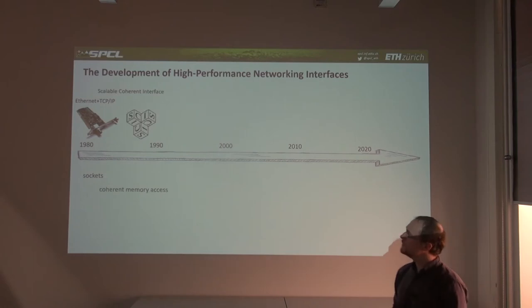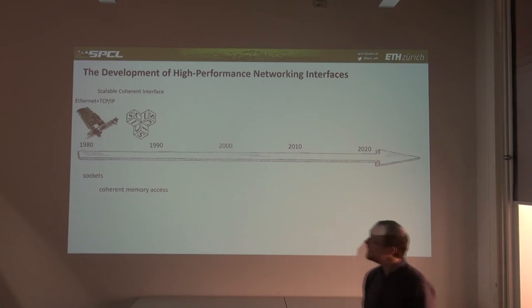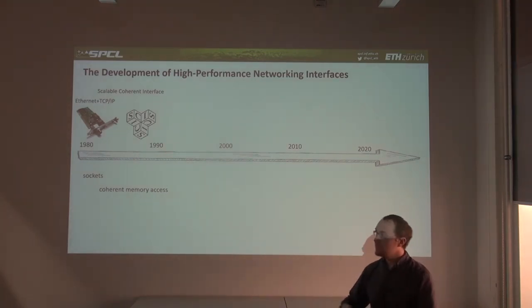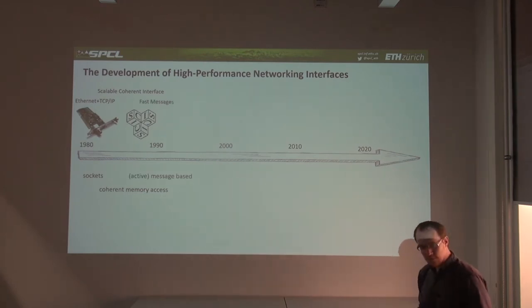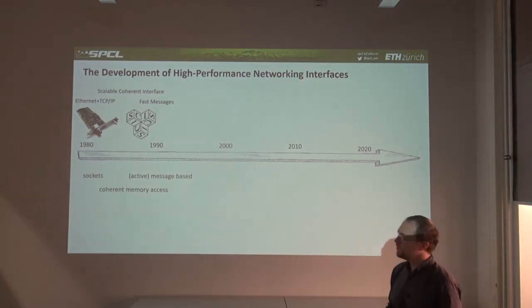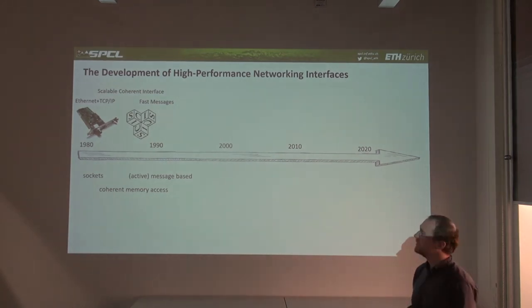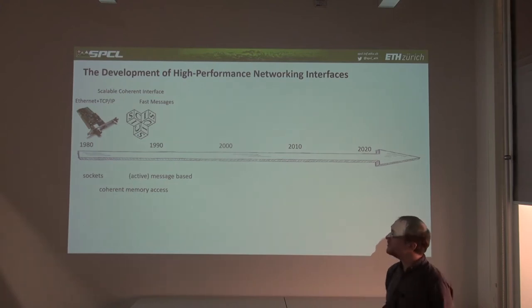In high-performance computing, it was relatively quickly recognized that TCP/IP together with sockets is not the most efficient communication mechanism. The idea was to implement coherent memory access over a large-scale device — the Scalable Coherent Interface, or SCI — which was then superseded by a mechanism called FastMessages, the first messaging-based mechanism based on active messages, providing a very high-performance communication interface.